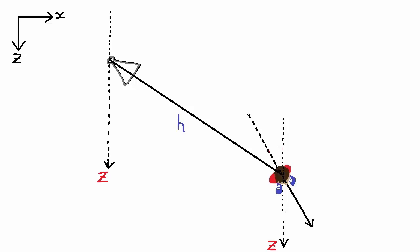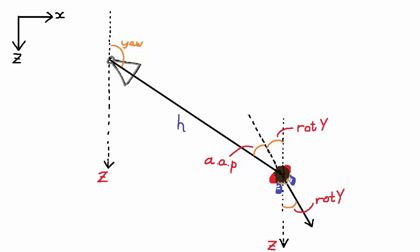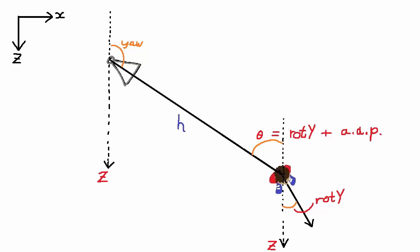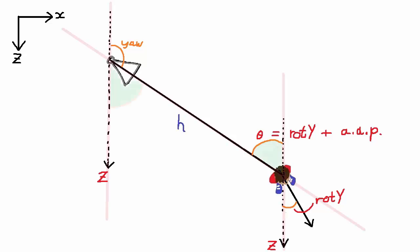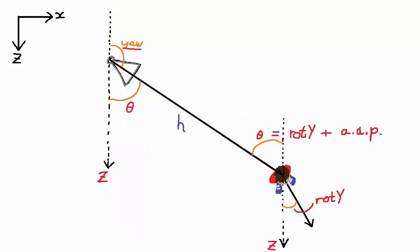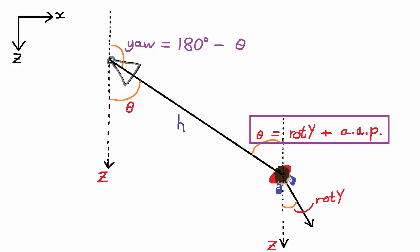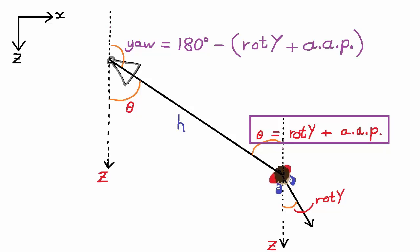Let's look at how we can calculate the camera's yaw. We know that this angle is the camera's angle around player, this angle is the player's y rotation, so this total angle theta equals the player's y rotation plus the angle around player — nothing new. Then using what we know about angles in parallel lines, this angle must also equal theta. The yaw angle is therefore equal to 180 degrees minus theta, which means yaw equals 180 minus (player's y rotation plus angle around player).